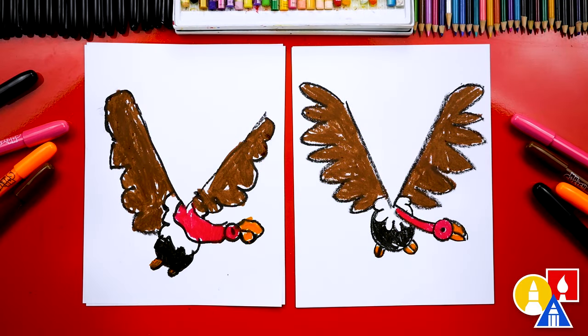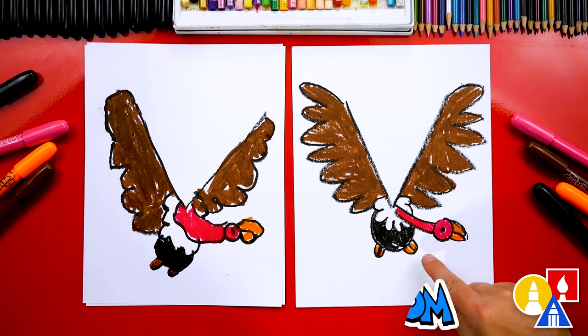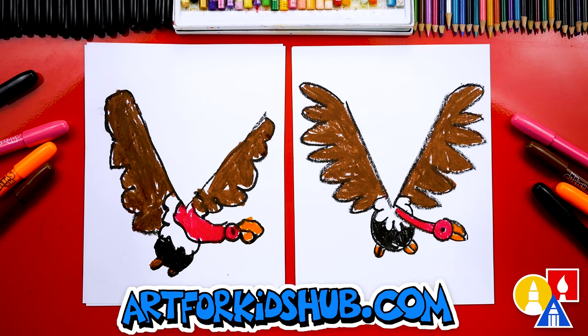Olivia, give me five. We did it. We finished drawing and coloring our vultures. And I love your drawing so much. Thank you. You can pause the video right now to match our same coloring. We use brown for the wings, black for the body, and this red-pink color for the head and neck. We also use orange for the beak and the feet.